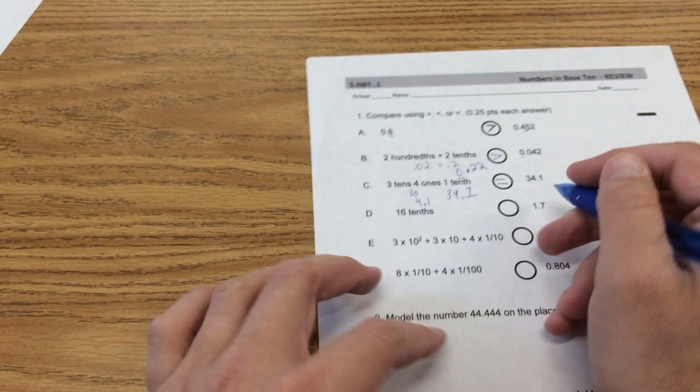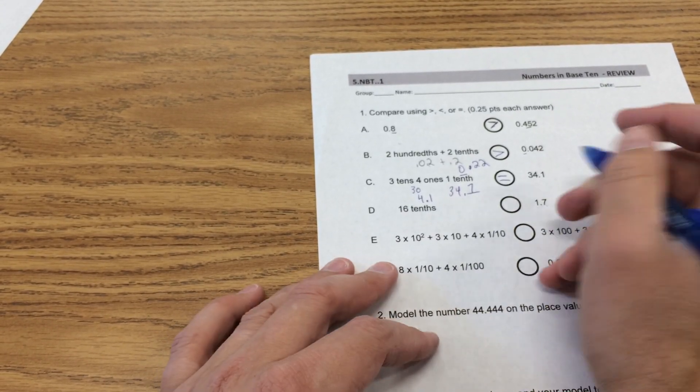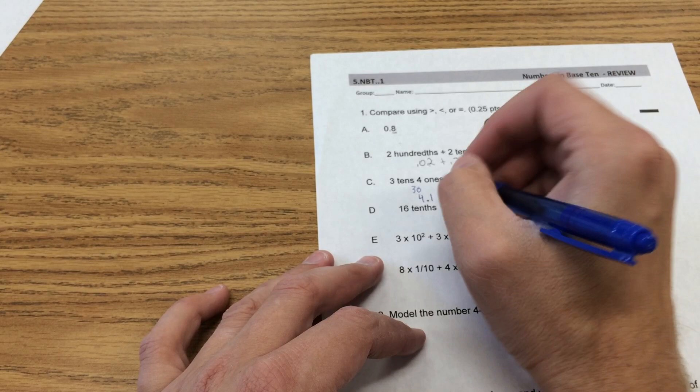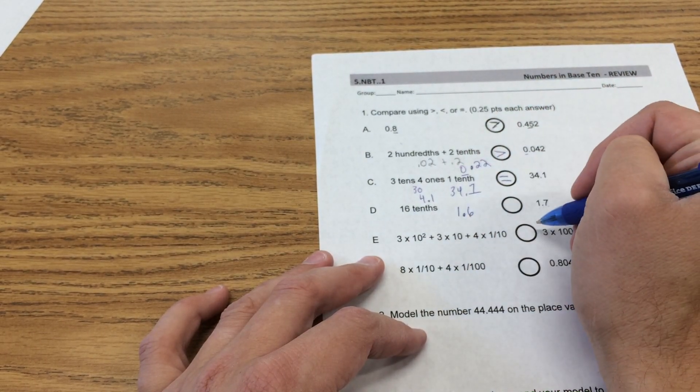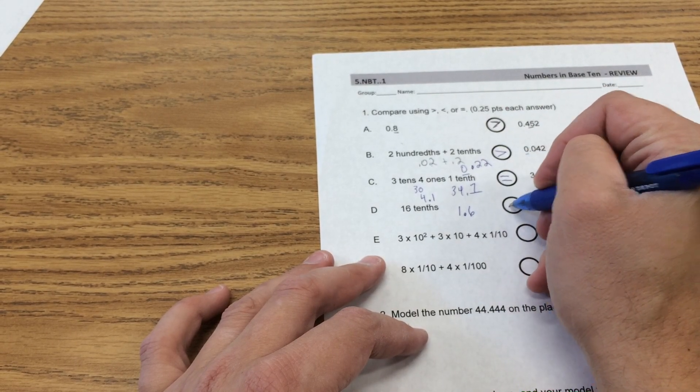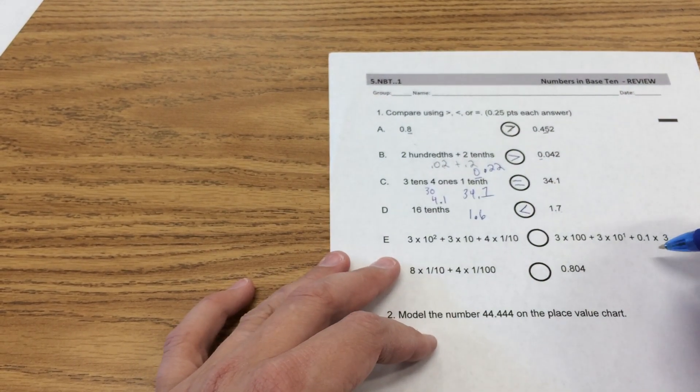Let's see. 16 tenths versus 1 and 7 tenths. That's 16 tenths. So 1 and 7 tenths is bigger or larger.